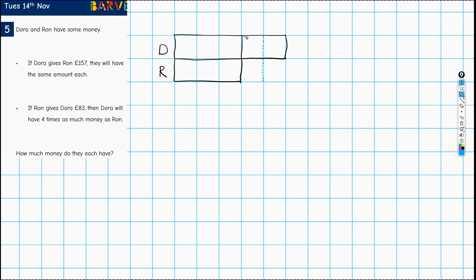And as you can see, the amount that Dora has more of is split into two. This is what she gives, and that's given to Ron. So whenever you have a scenario like this, the amount that's given is half of the difference between them. So if this is 157, then this is also 157. So the difference we now know between the amount of money that Dora has and the amount of money that Ron has is 157 times two, which is 314.